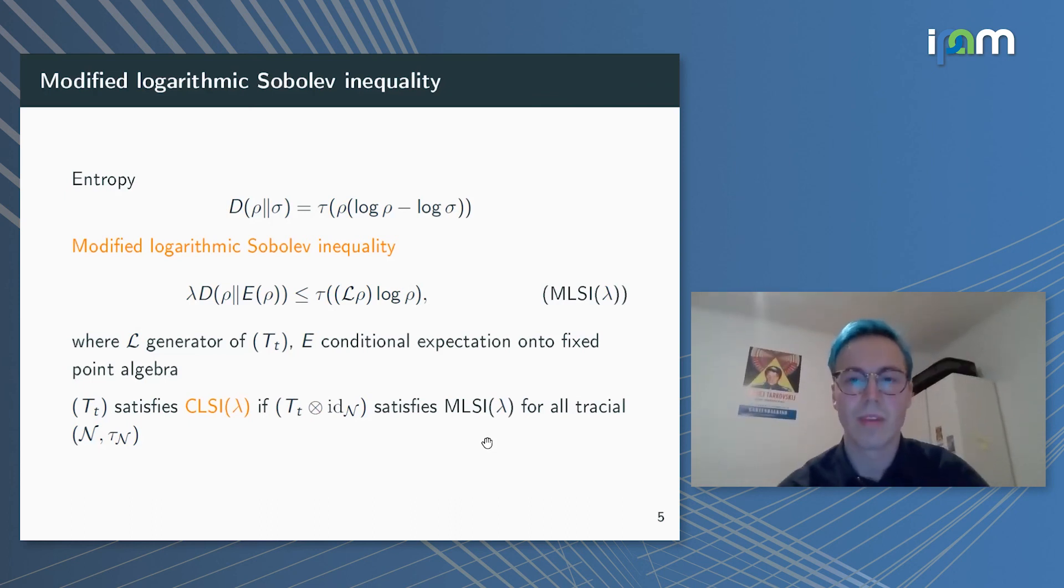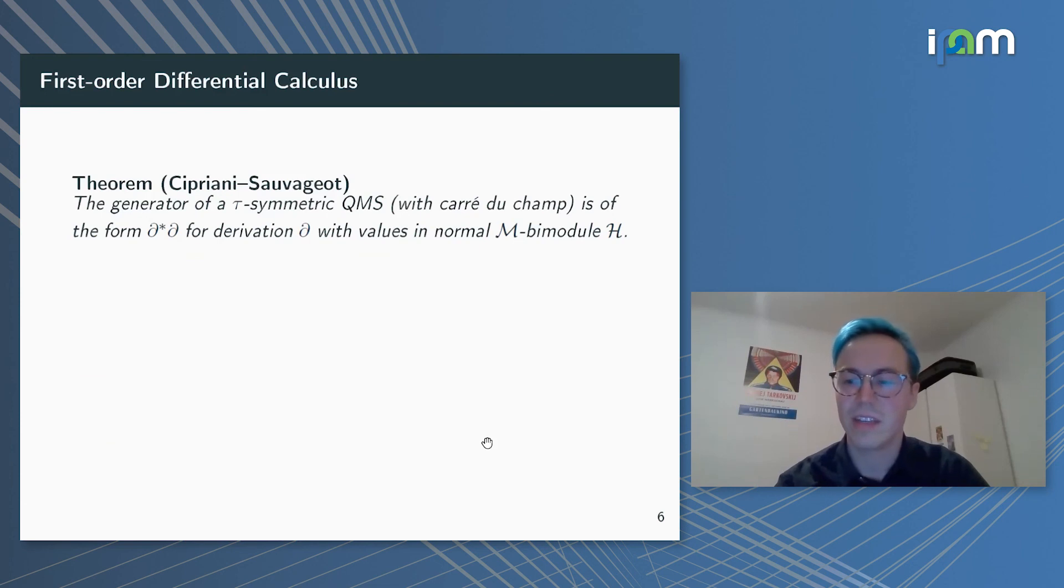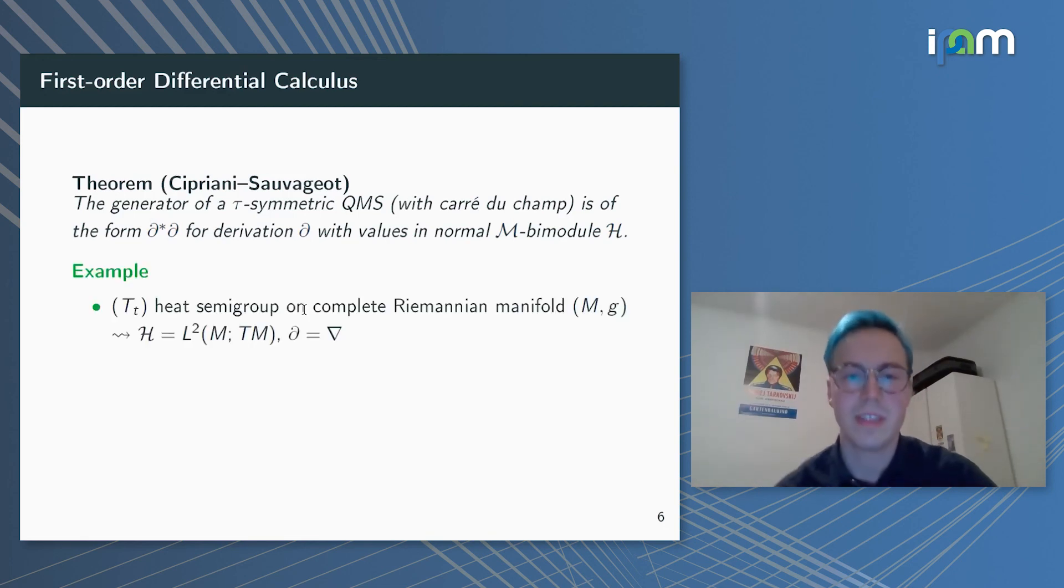Now, for all this game of going from Ricci curvature bounds of some kind to logarithmic Sobolev inequalities, one key ingredient is always that generators of these tracially symmetric QMS can be written in terms of derivations. Here in our setting, there's a result by Cipriani and Sauvageot that shows if I have a τ-symmetric QMS, then the generator is of the form d*d, where d is a derivation with values in a bimodule over M. Let's look at the very basic examples.